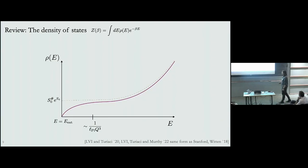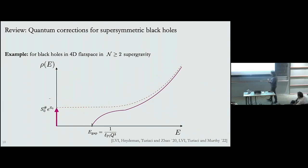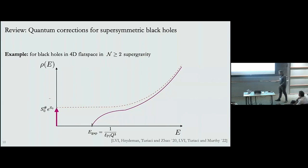In conclusion, as we approach extremality the quantum effects become large and the classical solution doesn't predict the right partition function. You might think this is a feature that disappears in the presence of supersymmetry, however that's not the case. If you do exactly the same exercise for supersymmetric black holes, you see that the deviation is even larger — at very low energies above extremality you find that there are no states at all.